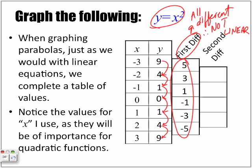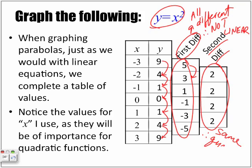Now we're going to look at the second difference. From five to three, we have a difference of two. From three to one, a difference of two. From one to negative one, a difference of two. From negative three to negative five, also a difference of two. Because our second difference is the same, therefore the expression is quadratic — it is a quadratic function.